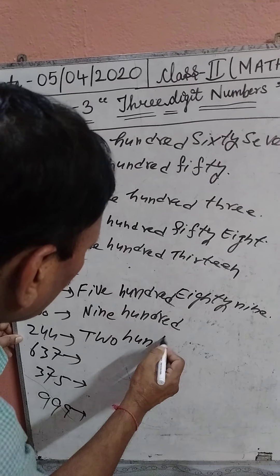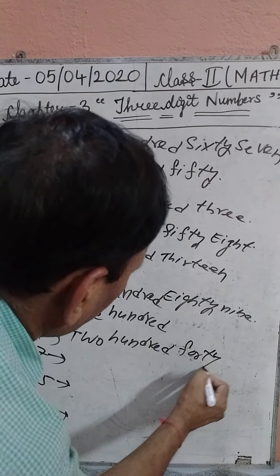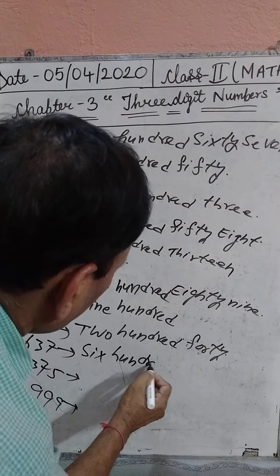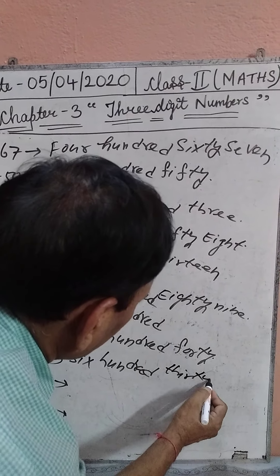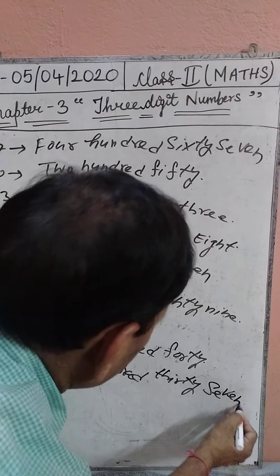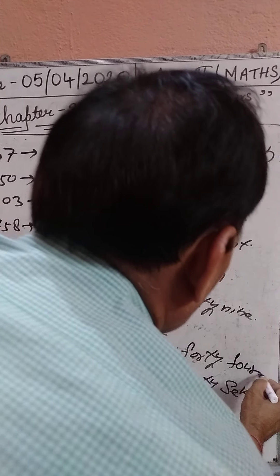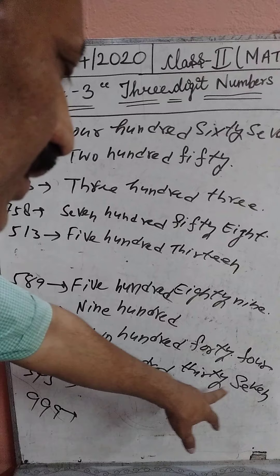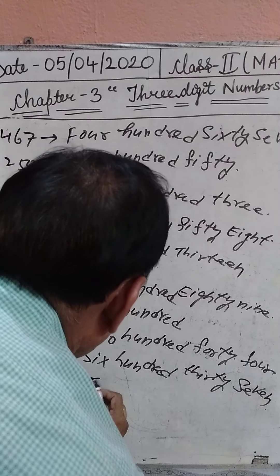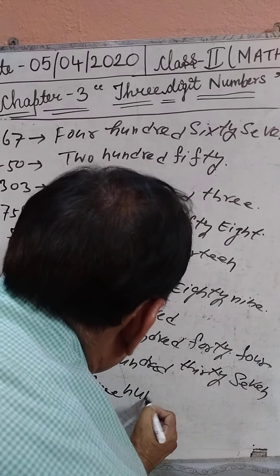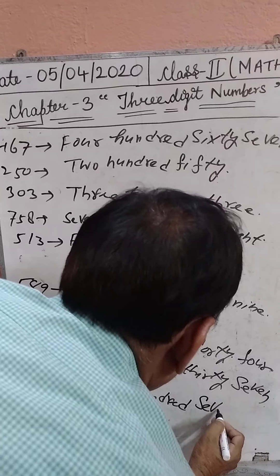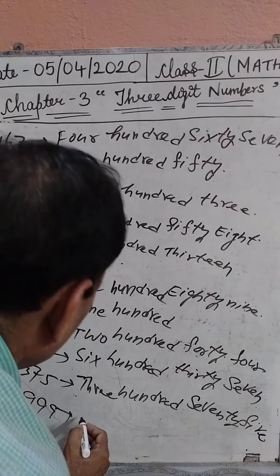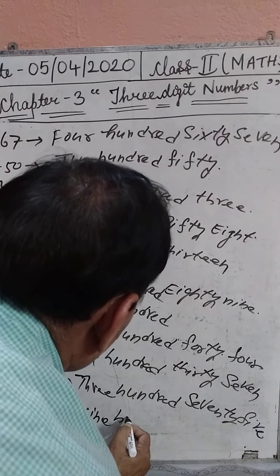Next, 637: six hundred thirty-seven. 244. Next, 737. Next, 375. Next, 999.